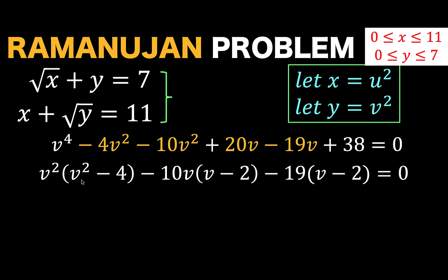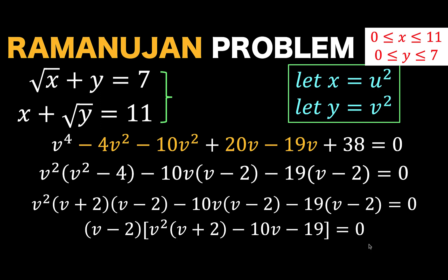Then, we have here a special product, v squared minus 4, which can be written as the product of the sum and difference of two numbers, v plus 2 and v minus 2. Everything else are copied. Notice now that we have v minus 2, v minus 2, v minus 2, which we can factor out. And so, we now have these final results.